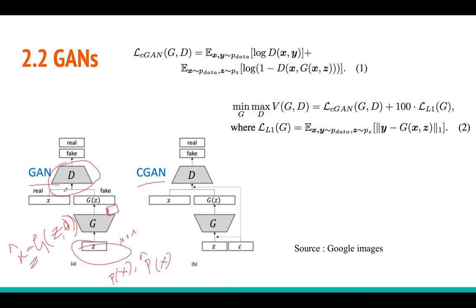The discriminator gives a feedback signal saying whether the image is real or fake, and the goal is to make the fake image as close to real as possible so the discriminator gets fooled. You play this min-max game: the discriminator tries to distinguish real from fake, while the generator tries to produce realistic images that fool the discriminator. This is the conditional GAN setup because X is used as conditioning input.